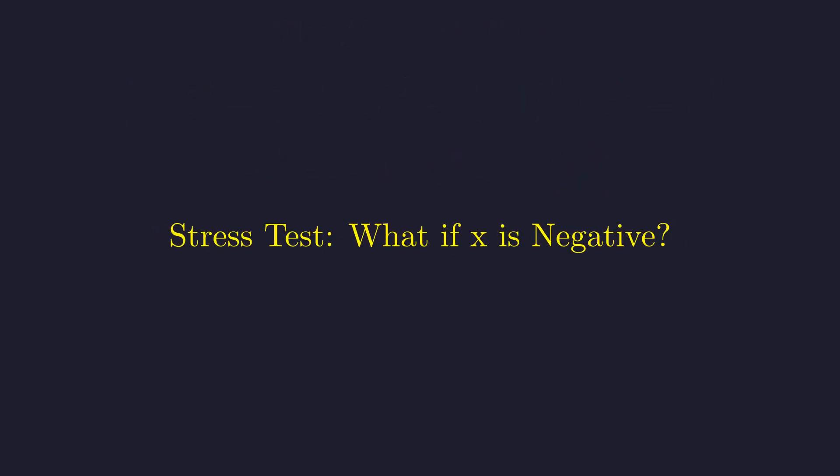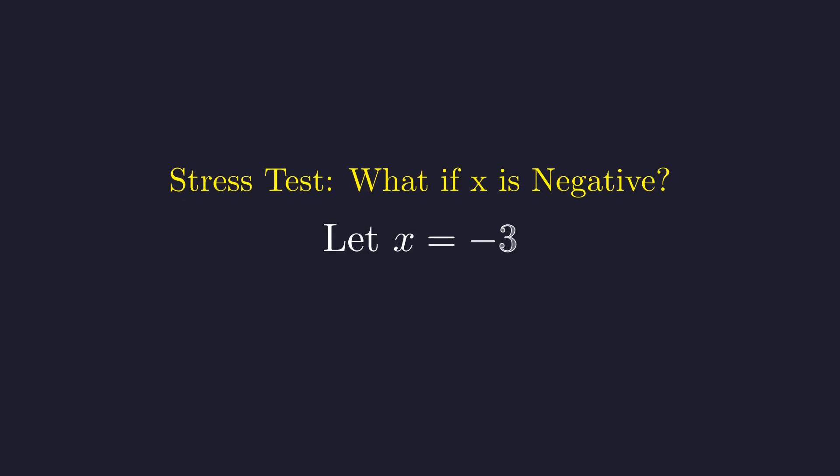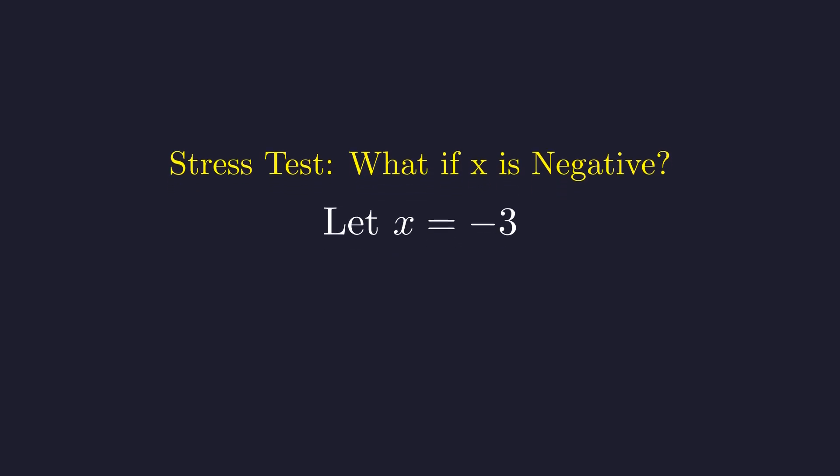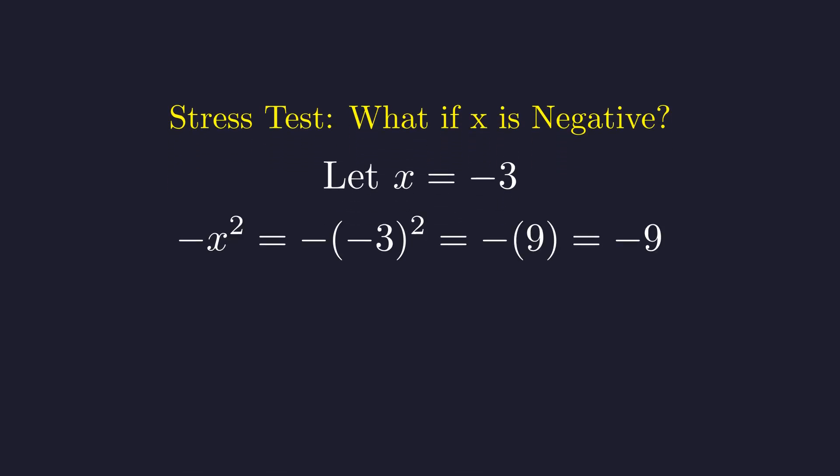Let's double check this understanding by trying a negative value. What if x equals negative 3? So we're setting x equal to negative 3. For our original expression, we substitute negative 3 for x. We square negative 3 to get 9, then apply the outer negative sign to get negative 9.